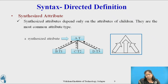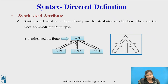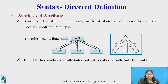A synthesized attribute depends only on the attributes of the children; they are the most common attribute type. In the diagram, A is a synthesized attribute and A.t is defined in terms of B.t1, C.t2, and D.t3 — so A.t depends on B.t1, C.t2, and D.t3. If a Syntax Directed Definition has synthesized attributes only, then it is called an S-attributed definition. S-attributed definitions are convenient since the attributes can be evaluated in a bottom-up traversal of the parse tree.